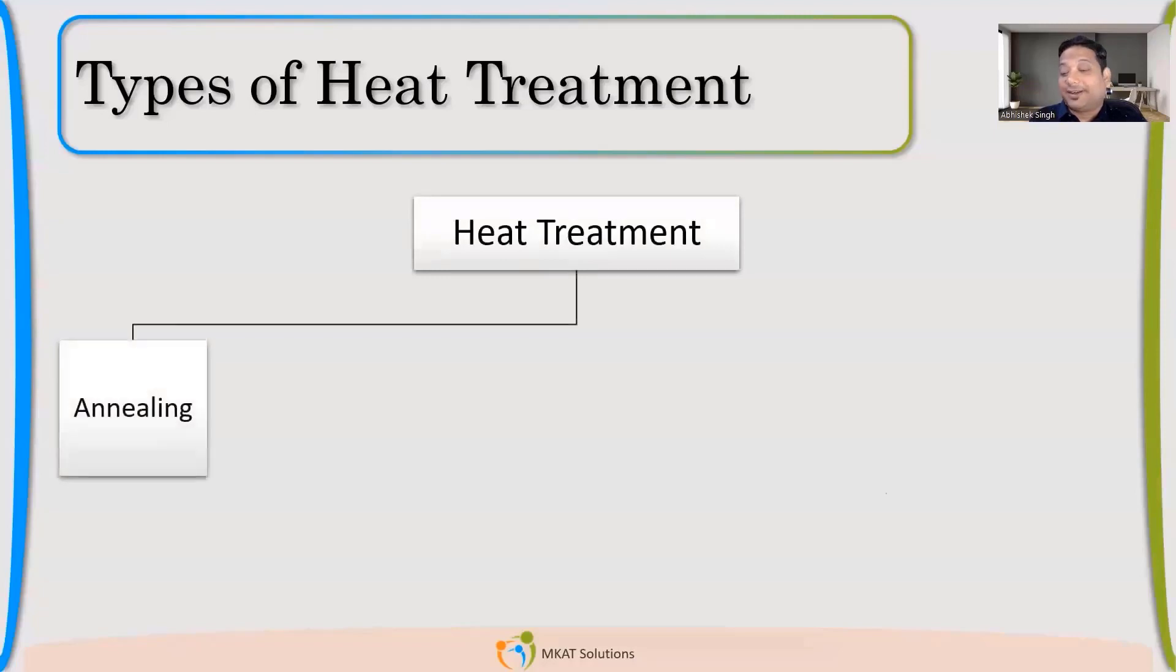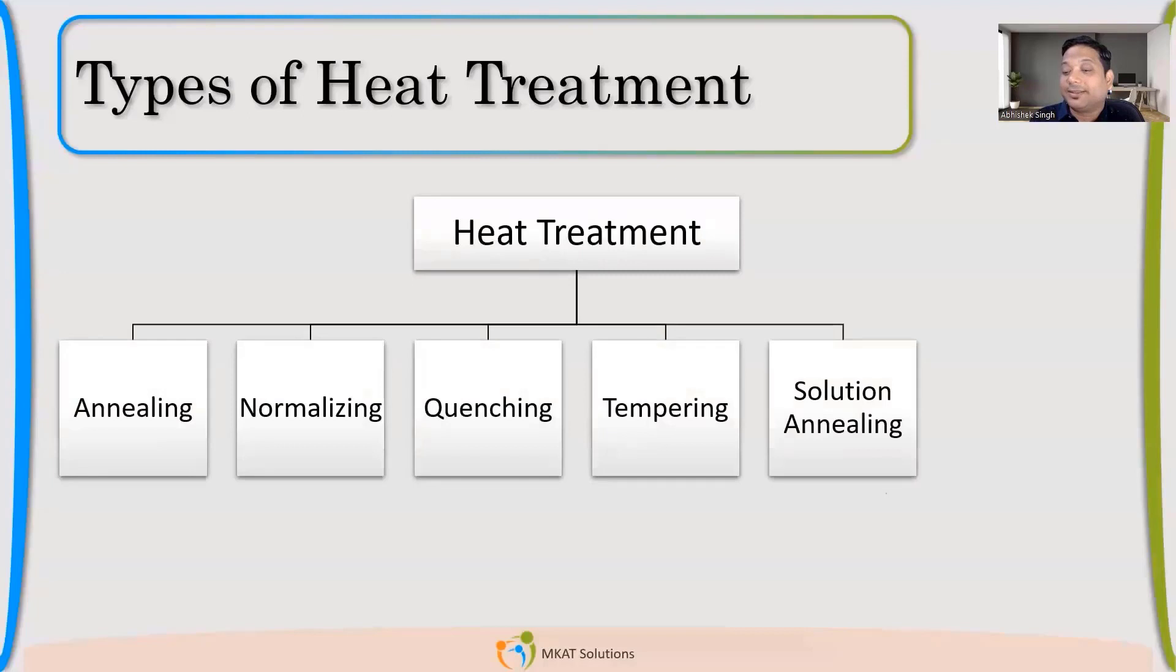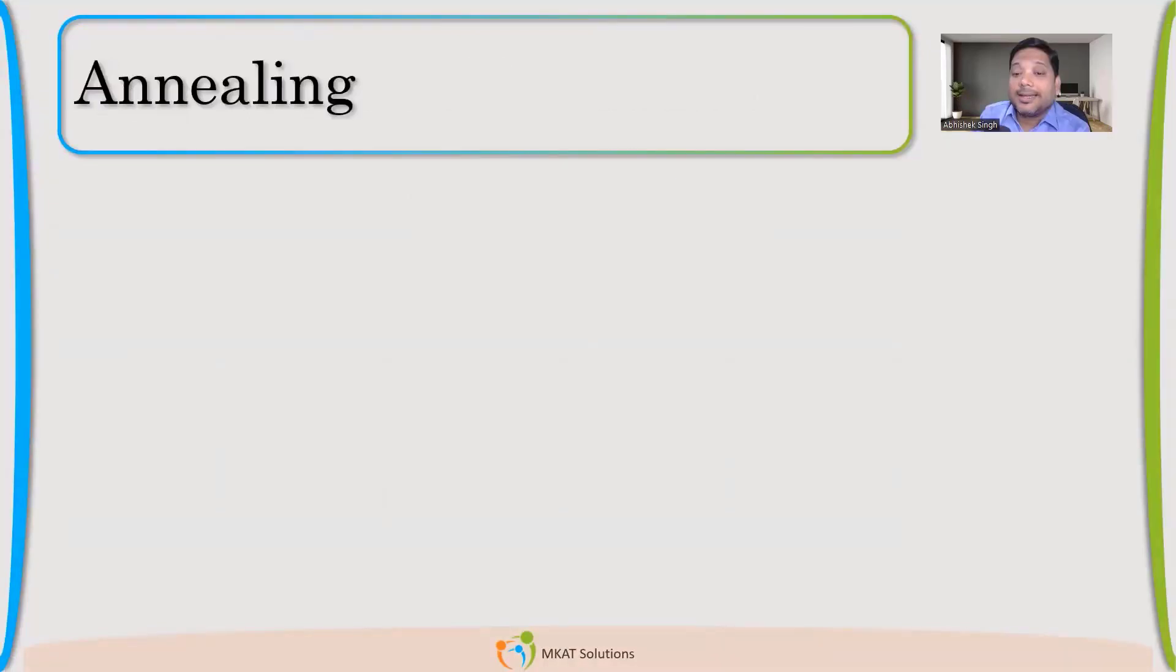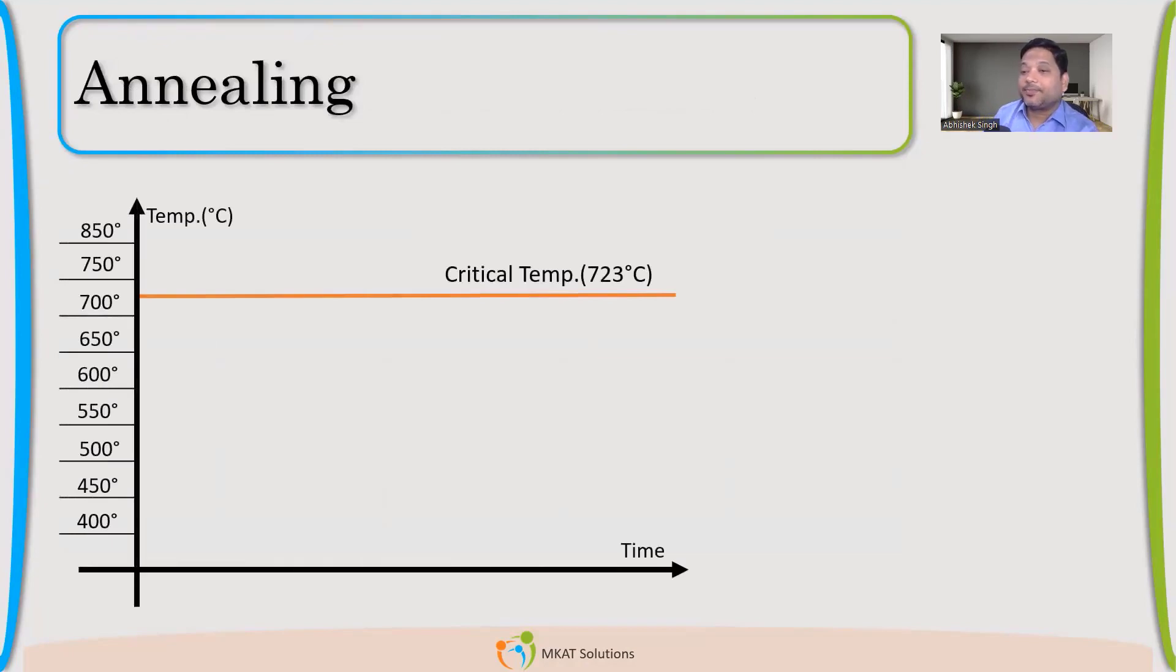What are the different types? So like annealing, normalizing, quenching, tempering, solution annealing, and then your post-weld heat treatment. Let us start with annealing. And please listen to it very carefully. I'm going to give some basic points which will be helpful to understand even other heat treatment processes.